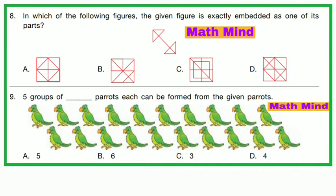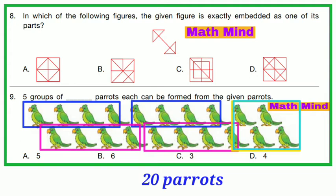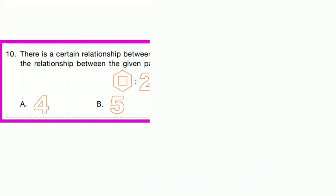Question No. 9: 5 groups of dash parrots each can be formed from the given parrots. Total number of parrots is 20. We have to form 5 groups, so 20 ÷ 5 = 4. There will be 4 parrots in each group. Option D is correct.